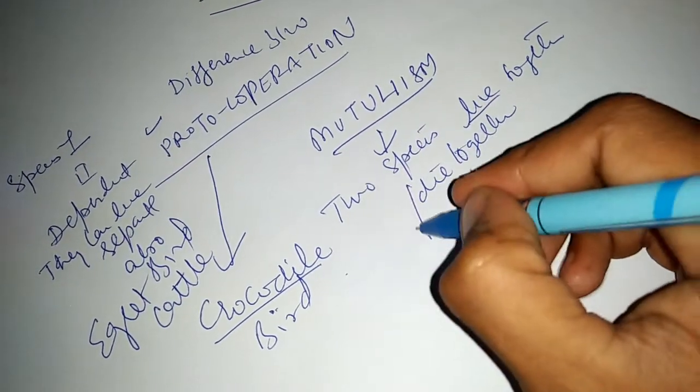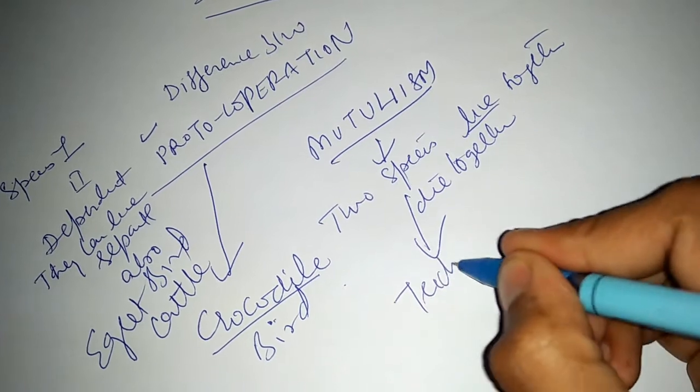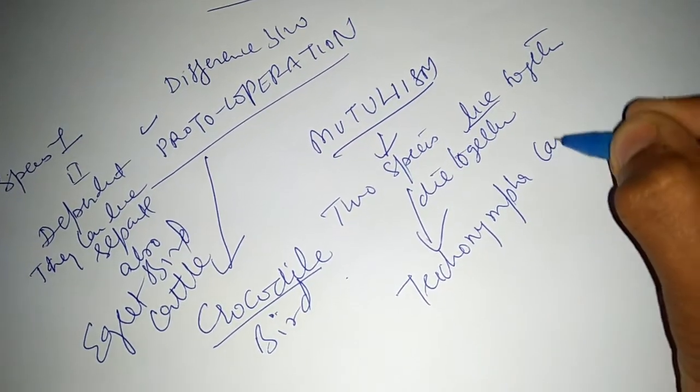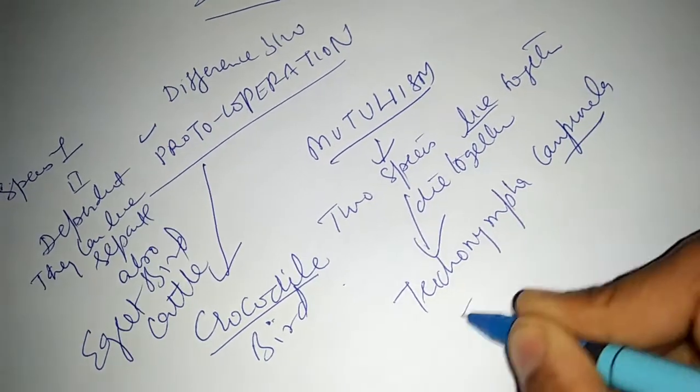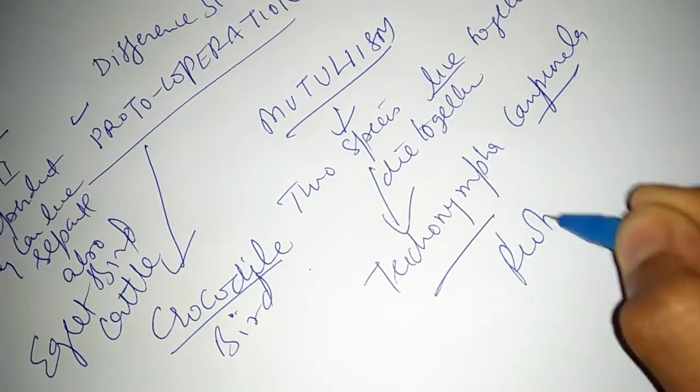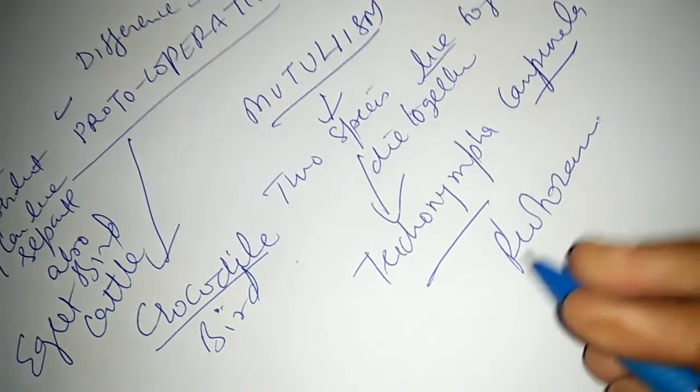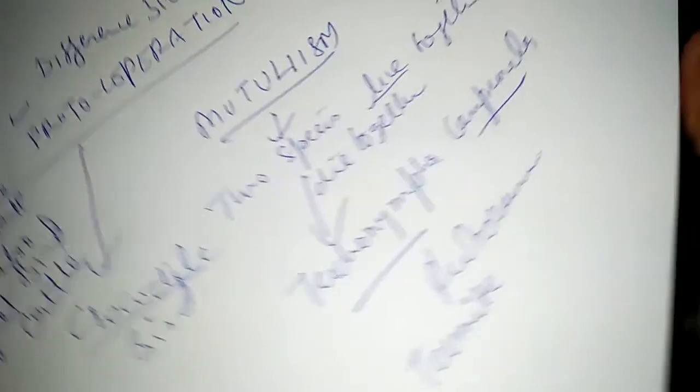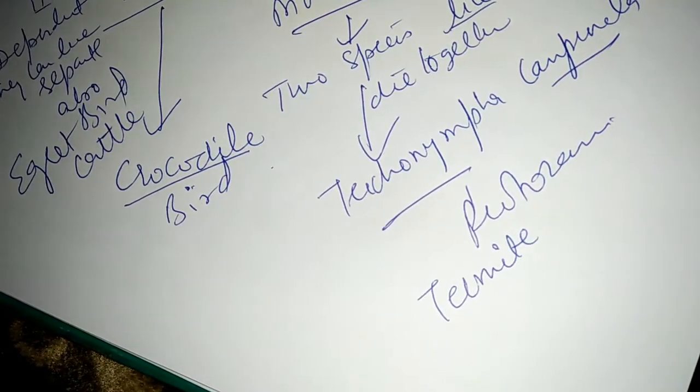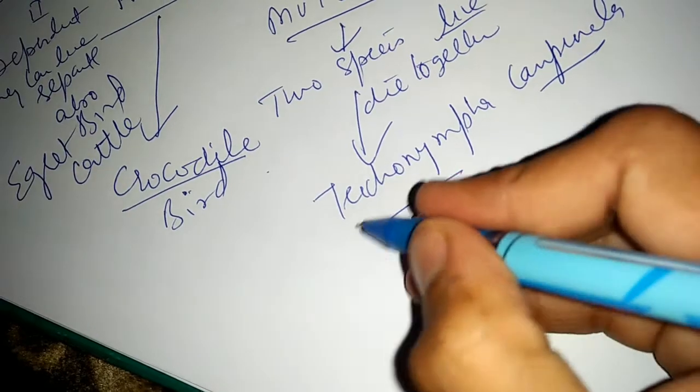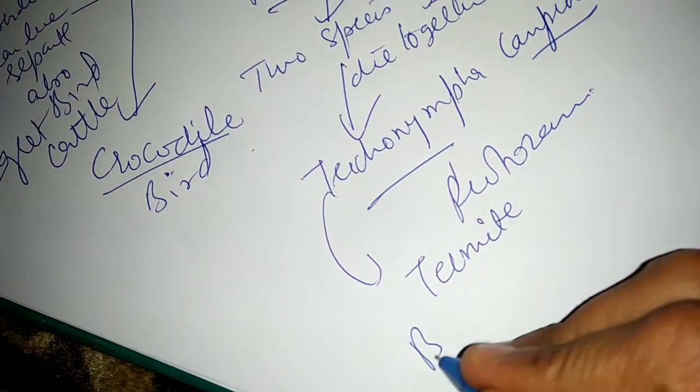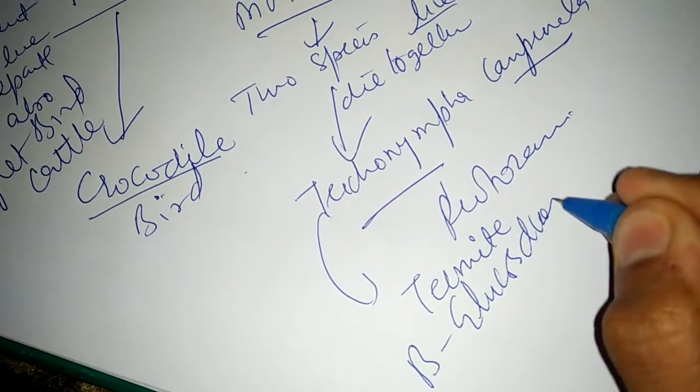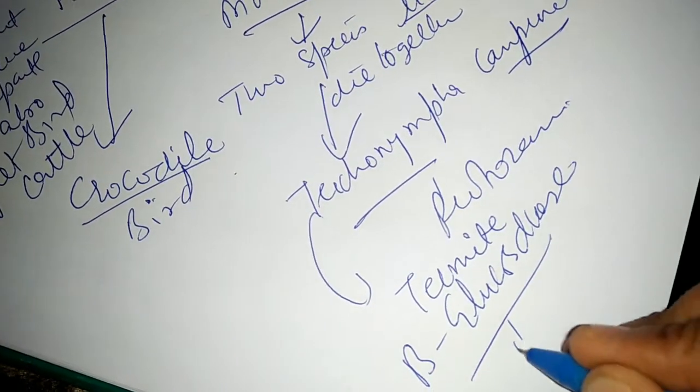Here is mutualism: trichonympha campanella, a protozoan that lives in the termite. It lives for shelter and in return gives the enzyme beta-glucosidase for cellulose digestion.